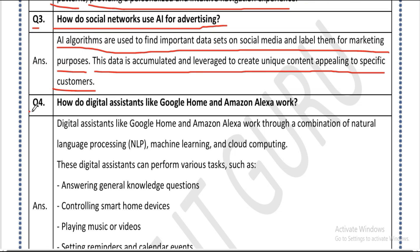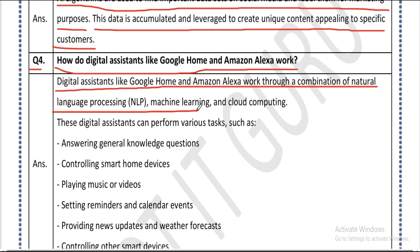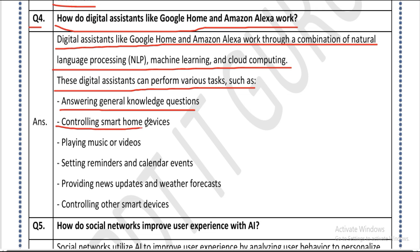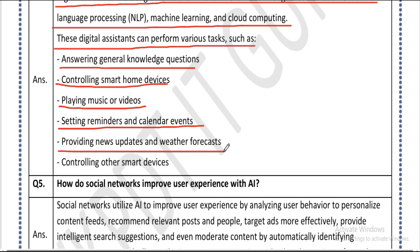Question four: how do digital assistants like Google Home and Amazon Alexa work? Answer: digital assistants work through a combination of natural language processing, machine learning, and cloud computing. They can perform various tasks such as: answering general knowledge questions, controlling smart home devices, playing music or videos, setting reminders and calendar events, providing news updates and weather forecasts, and controlling other smart devices.